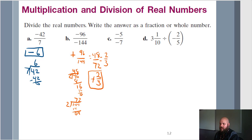Next: negative 5 over 7, divided by negative. Like part B, we have two negatives, so we get a positive. This fraction is already fully reduced, so the answer is simply positive 5/7.